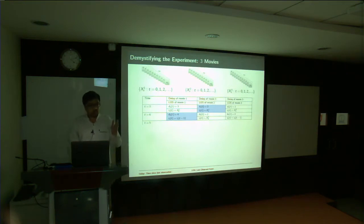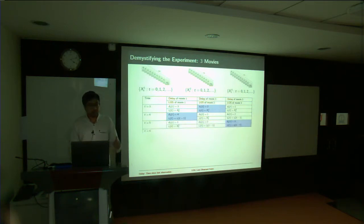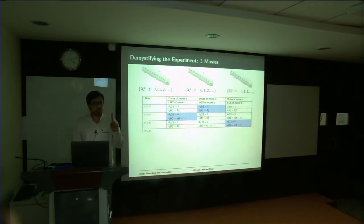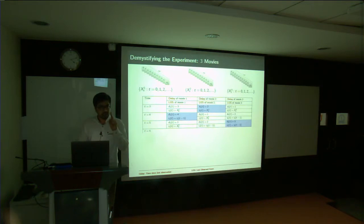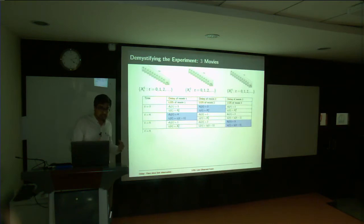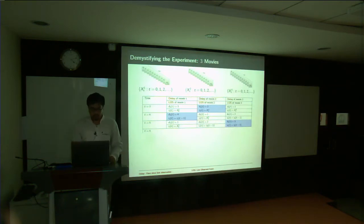At t equal to 4, if you sample movie 1, things get updated accordingly. So there is a certain pattern: exactly one of the delays d(t) is going to be 1 — indicating which one you observed in the immediately previous time instant — and all the other delays keep getting incremented accordingly.